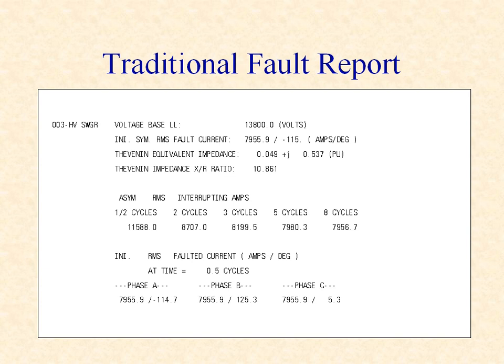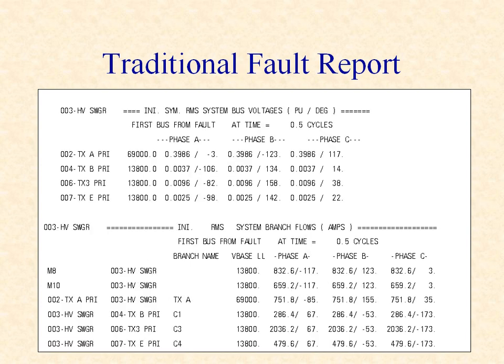The DAPR fault report lists the initial symmetrical RMS fault current at each equipment bus, the Thevenin equivalent impedance, and X over R ratio. It provides asymmetrical RMS fault values at one-half, two, three, five, and eight cycles, and phase or sequence currents for unbalanced fault conditions. For each fault location, the DAPR traditional fault report lists the voltage at every bus in the network. Branch currents flowing through the network to the fault location are also reported.